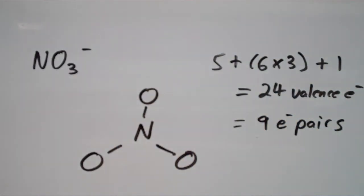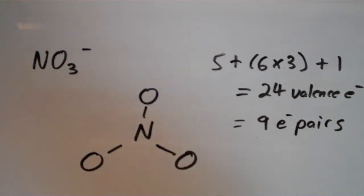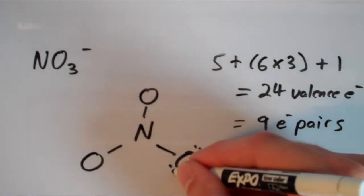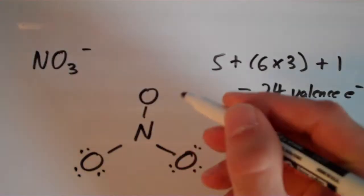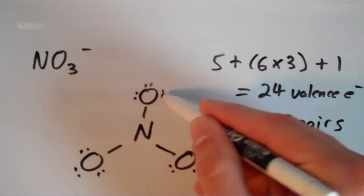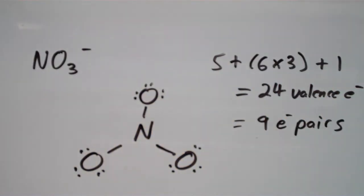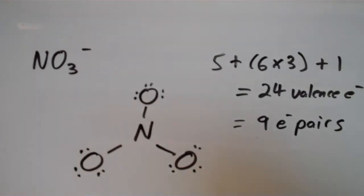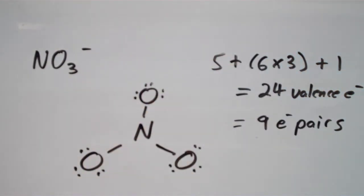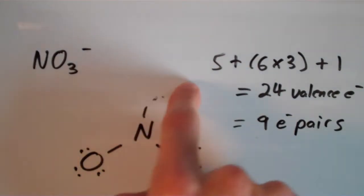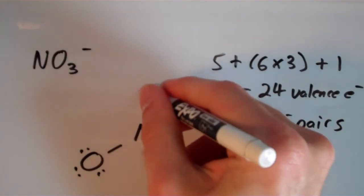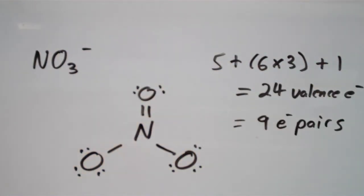We add lone pairs to the more electronegative oxygen atoms to give octets to as many as possible, using all nine remaining pairs. Now we need to form a double bond as necessary to give nitrogen an octet — currently all oxygens have octets but nitrogen does not. We move one lone pair from one oxygen into the bonding region to create a double bond, and now everything has an octet.